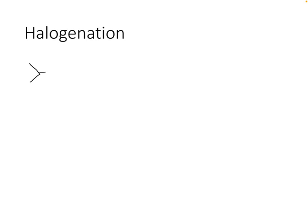We'll start with an alkene. Remember the alkene can act as a nucleophile because it's electron rich due to that pi bond. And instead of hydrobromic acid adding across the double bond, what if we try to add two halogens across the double bond? What if we're trying to add bromine across the double bond? How would that work?